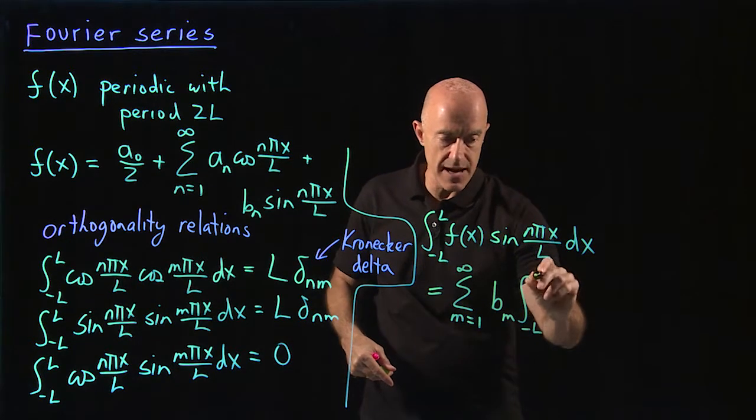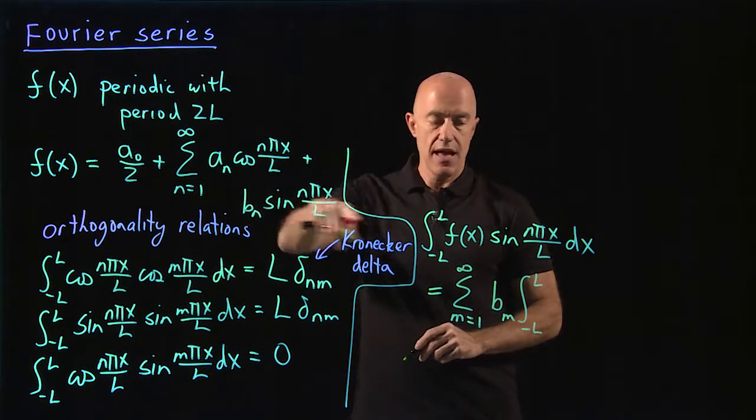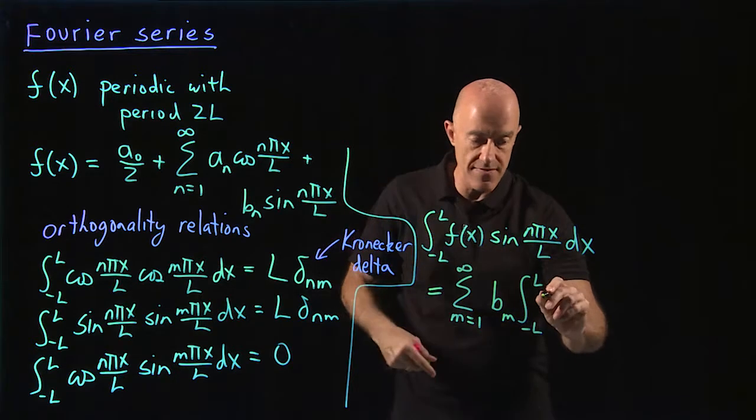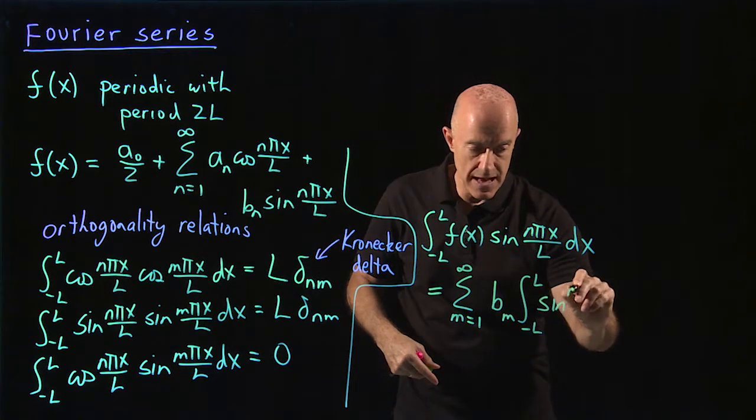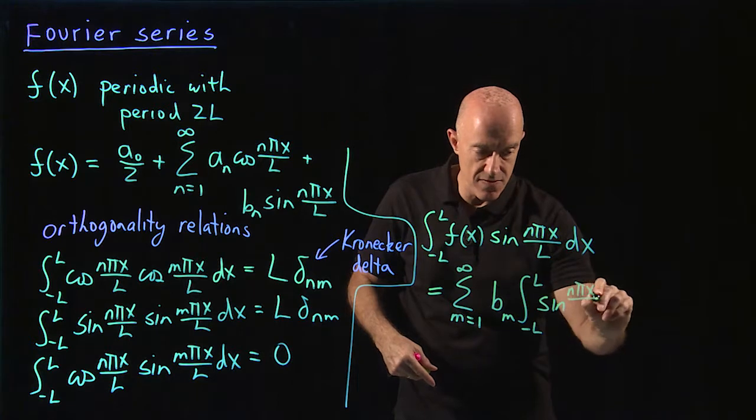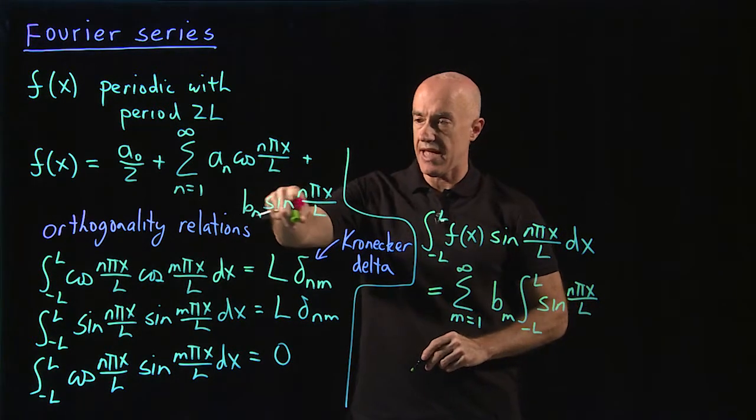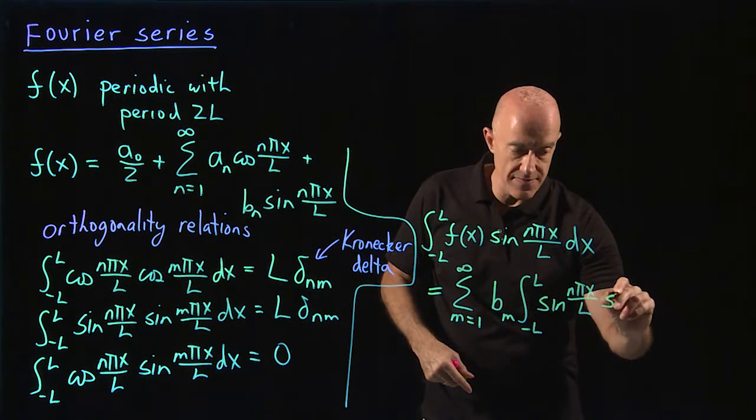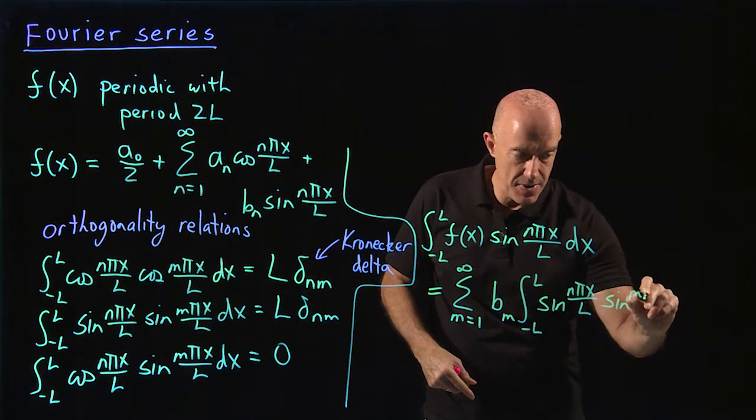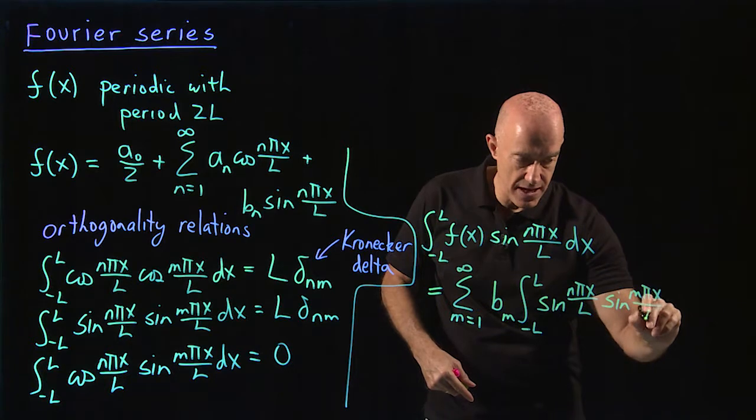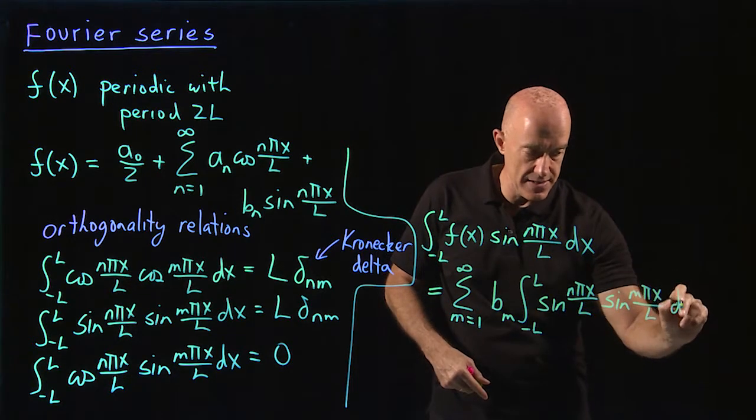So we would have an integral from minus l to l. And then we would have our sine n pi x over l. And from this one, because we changed n to m, we would have a sine m pi x over l. And we integrated dx.